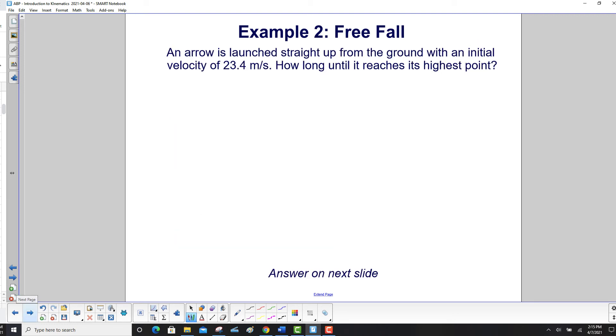An arrow is launched straight up from the ground with an initial velocity of 23.4 meters per second. How long until it reaches its highest point?